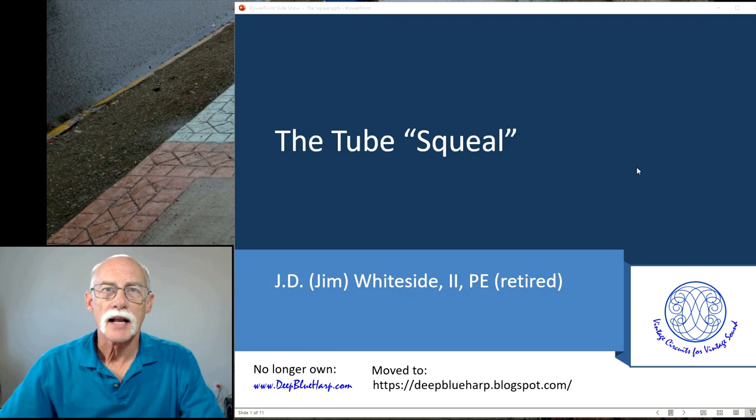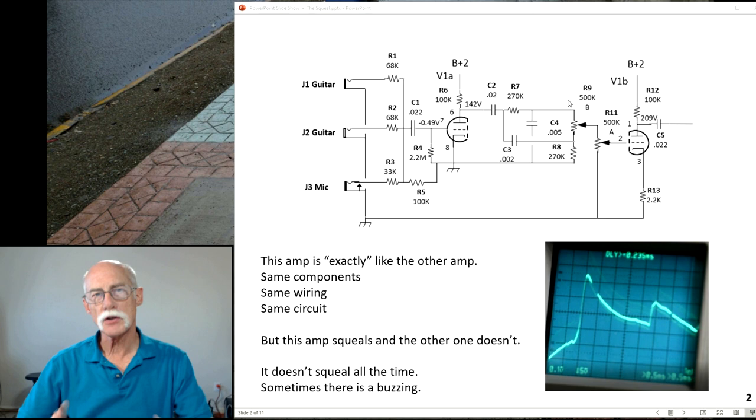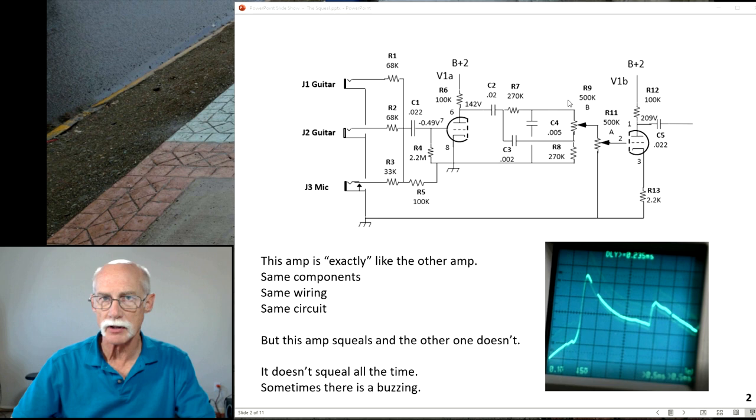Today I'm going to talk about tube squeal. If you've been building amps long enough, you will encounter this. Here's a typical preamp section. The first preamp, V1A, typically does not squeal because the cathode is grounded. There's no way to perpetuate a squeal if the grid is grounded.